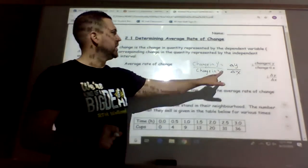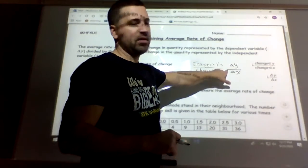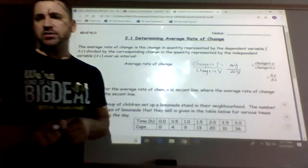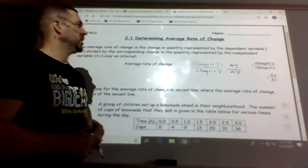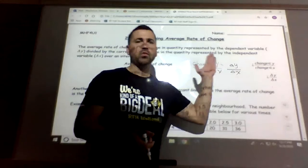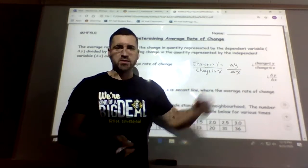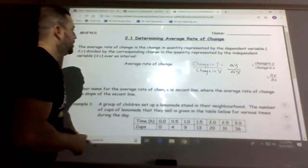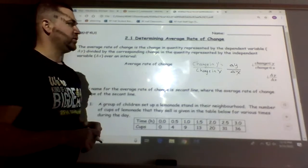So we're doing the change in y divided by the change in x, which is slope. So y2 minus y1 over x2 minus x1. That's the average rate of change formula.